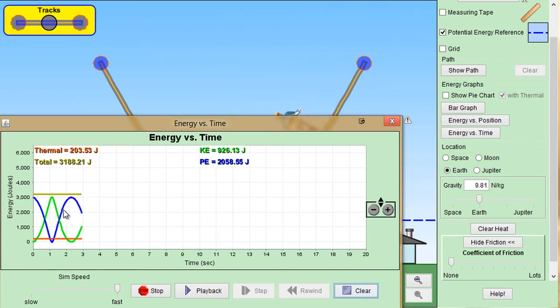So we have kinetic energy in green, potential energy in blue, thermal energy in red, and total energy in yellow.